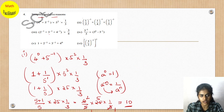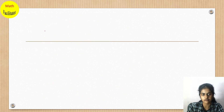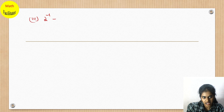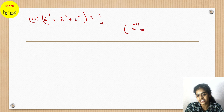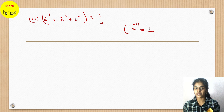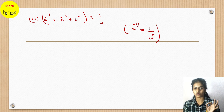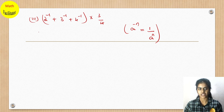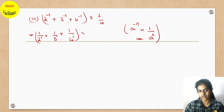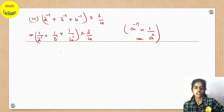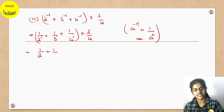The next question: 2 to the power minus 1 plus 3 to the power minus 1 plus 4 to the power minus 1, into 3 by 4. Using the law a to the power minus n equals 1 by a to the power n, each negative power becomes a positive power in the denominator: this is 1 by 2 plus 1 by 3 plus 1 by 4, multiplied by 3 by 4.